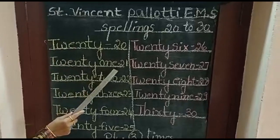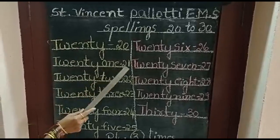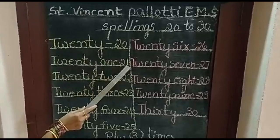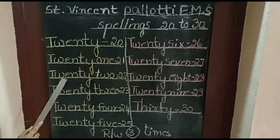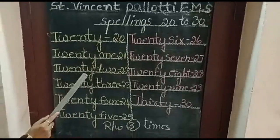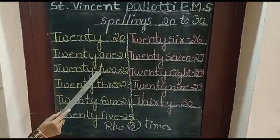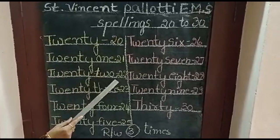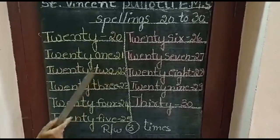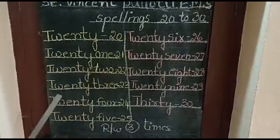O-N-E, 1, 21. 2-1, 21. T-W-E-N-T-Y T-W-O. 22. 2-2, 22.